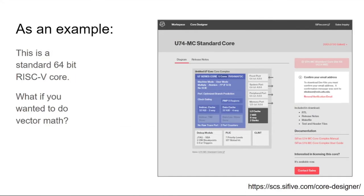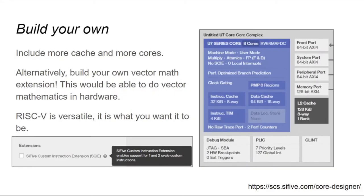Here I have an off-the-shelf schematic for a RISC-V processor. But what if you needed it to do vector math? There are two main approaches to this with RISC-V. First is to include more cache and more cores into the processor design — since RISC is scalable, doing so is easy. The second approach is to hard-code vector math into the chip as part of what RISC-V calls SCIE, or Custom Instruction Extensions. These are short one-to-two cycle instructions that can perform very optimized tasks very quickly. RISC-V offers many other ways to customize chips, including added security, development, and power management features.